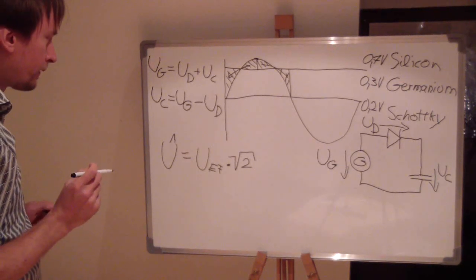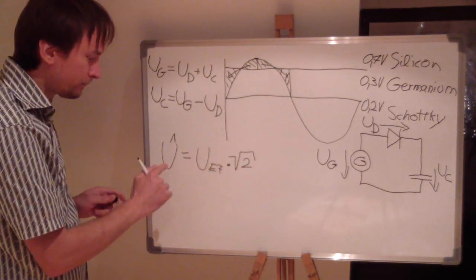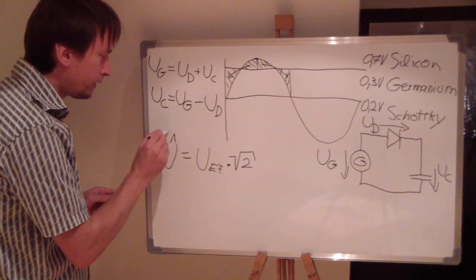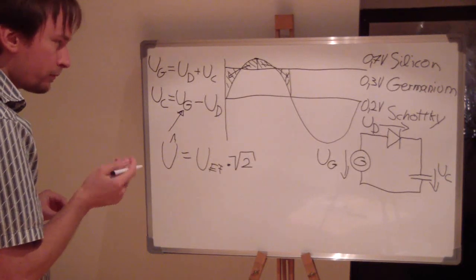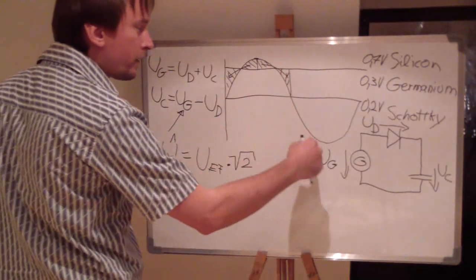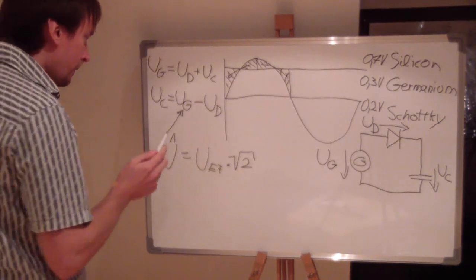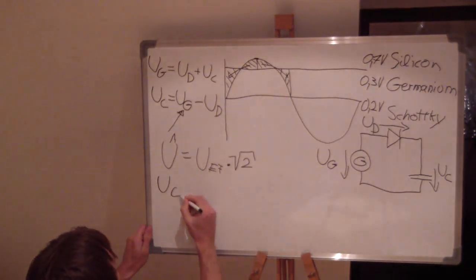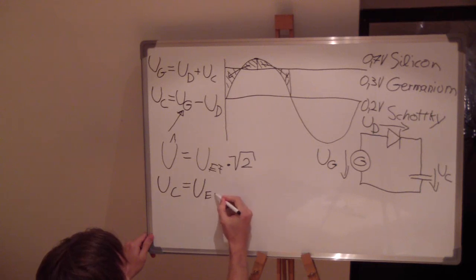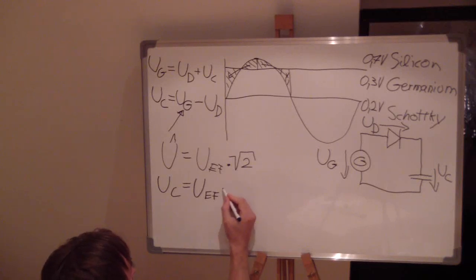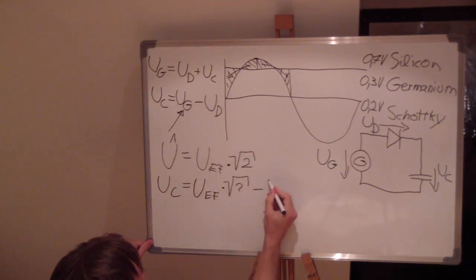The peak voltage is calculated by this formula. You can put this value in to get the maximum voltage that this capacitor can be loaded to by a sine wave alternating current of an effective voltage. That means the voltage of the capacitor equals the effective voltage — what a meter will show you — multiplied by the root of 2, and then minus the voltage of the diode.